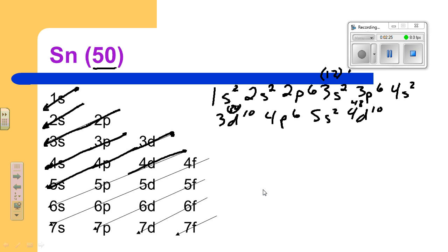So that's going to take us down. We're going to go to 5p, but we're not going to need them all. We're going to need 5p, 2.